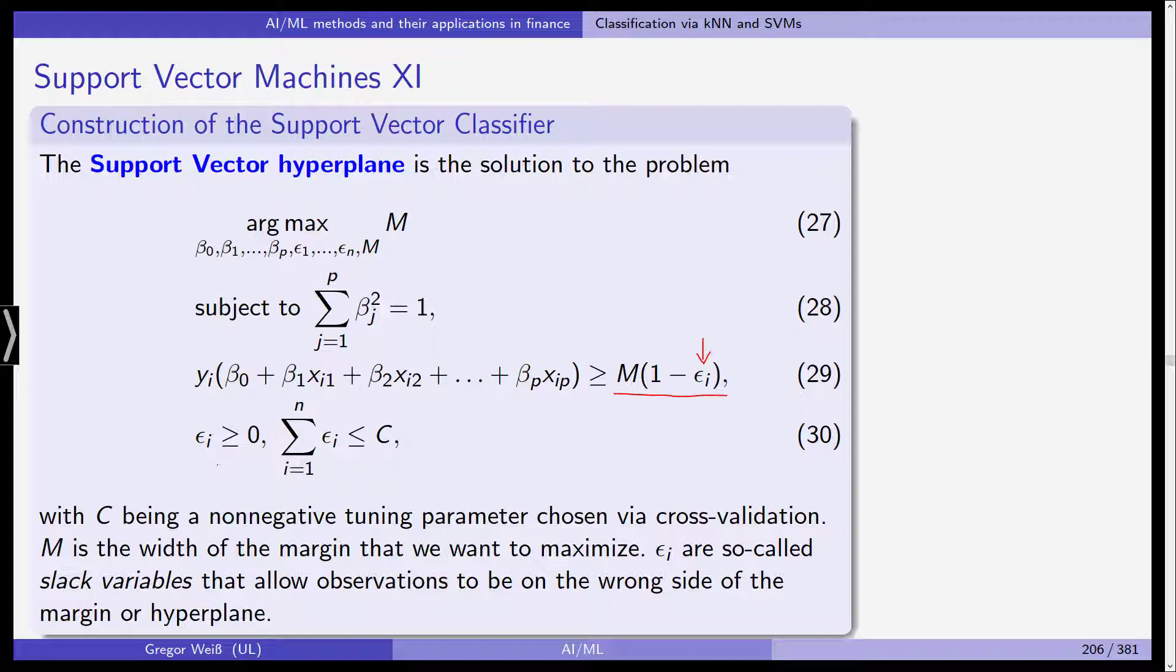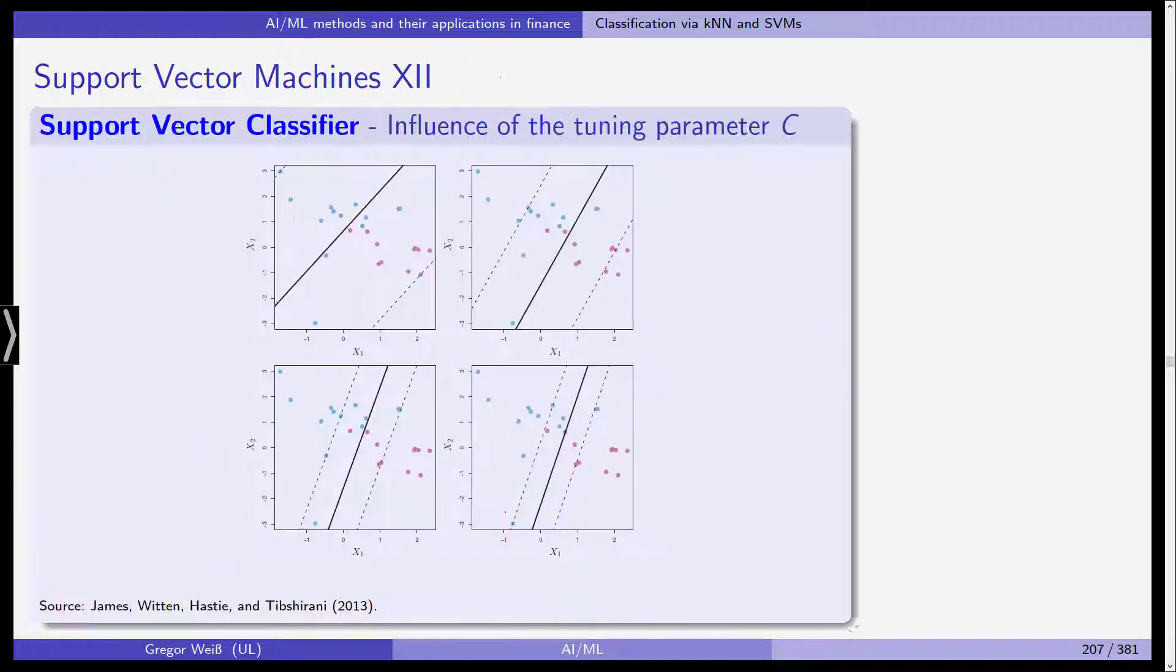So then this would be captured in the slack variable. And we allow our demand that these slack variables are non-negative. And we have an additional hyperparameter, which is c, so that the sum of all those slack variables, in other words, the sum of the errors that we allow, this needs to be smaller or equal than c. So c is a non-negative tuning hyperparameter. It's chosen via cross-validation, and M is again the margin. So this is the support vector classifier.